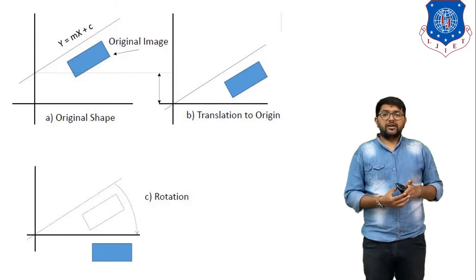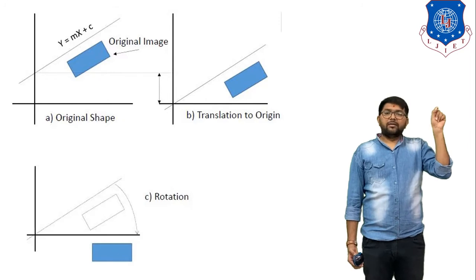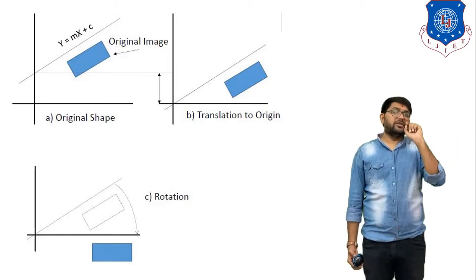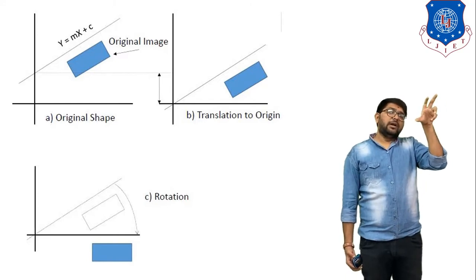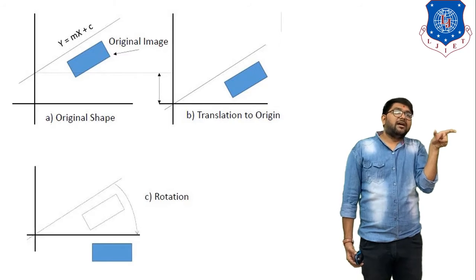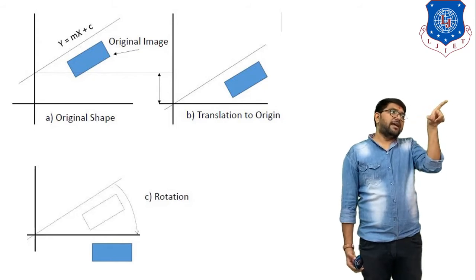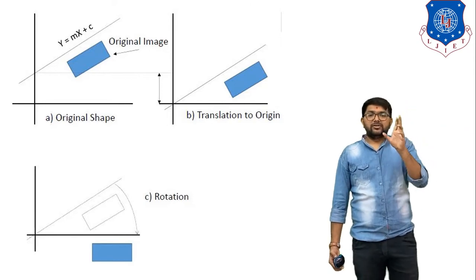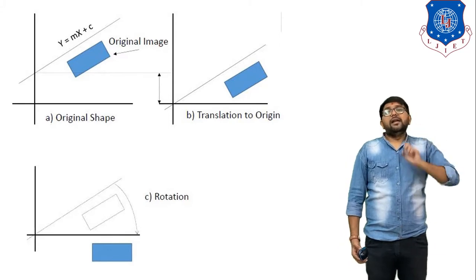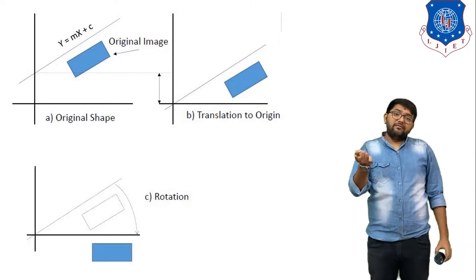The second step is clockwise rotation. We have the value of theta from tan(theta) equals m, so theta equals arctan(m). If we give a clockwise rotation of the line by theta, the line moves onto the x-axis. Why do we move the line to the x-axis? Because we have the equation to find reflection about the x-axis, that is why we move the line there.